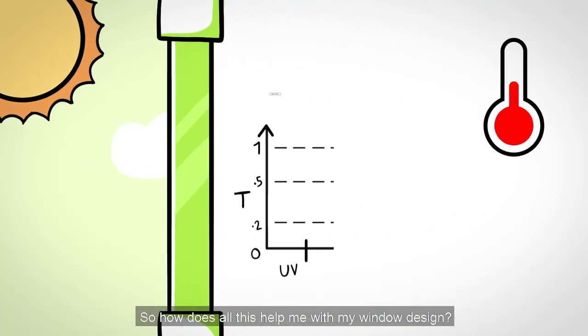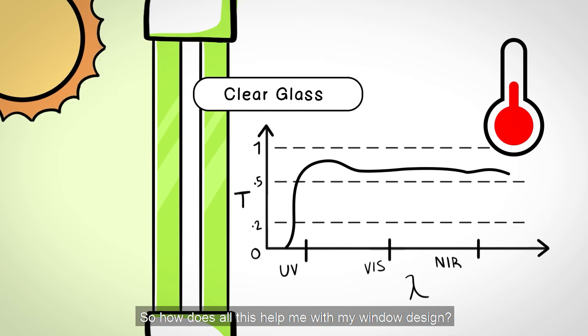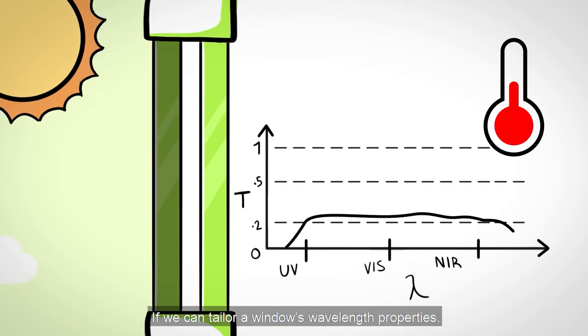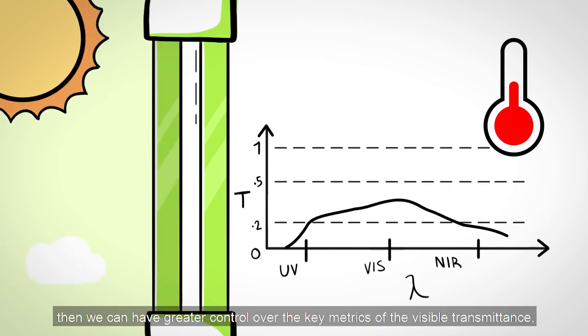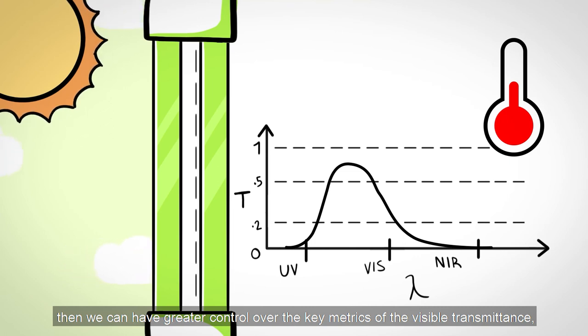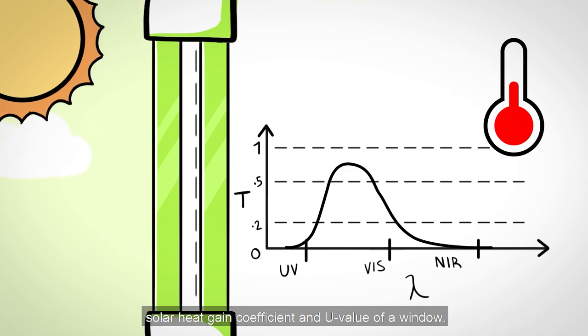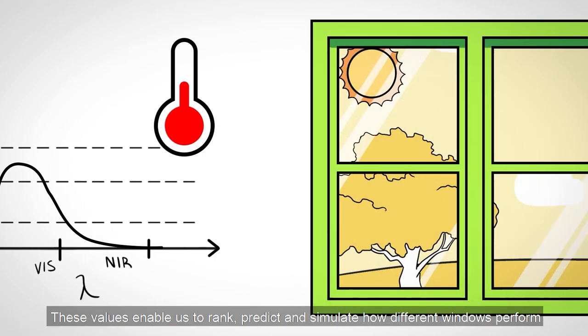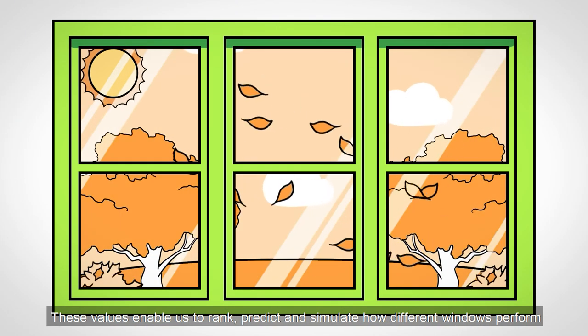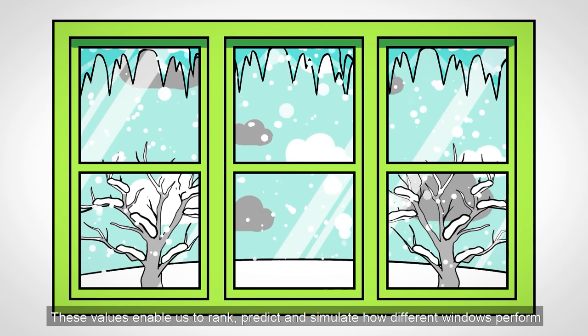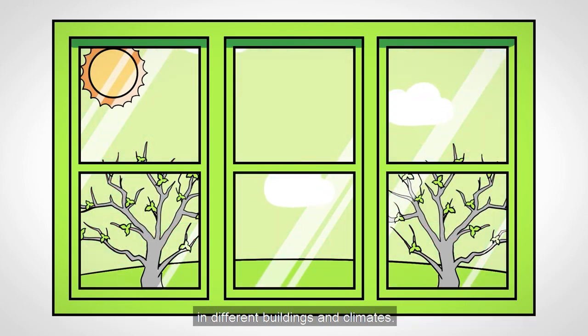So, how does all this help me with my window design? If we can tailor a window's wavelength properties, then we can have greater control over the key metrics of the visible transmittance, solar heat gain coefficient, and the U-value of a window. These values enable us to rank, predict, and simulate how different windows perform in different buildings and climates.